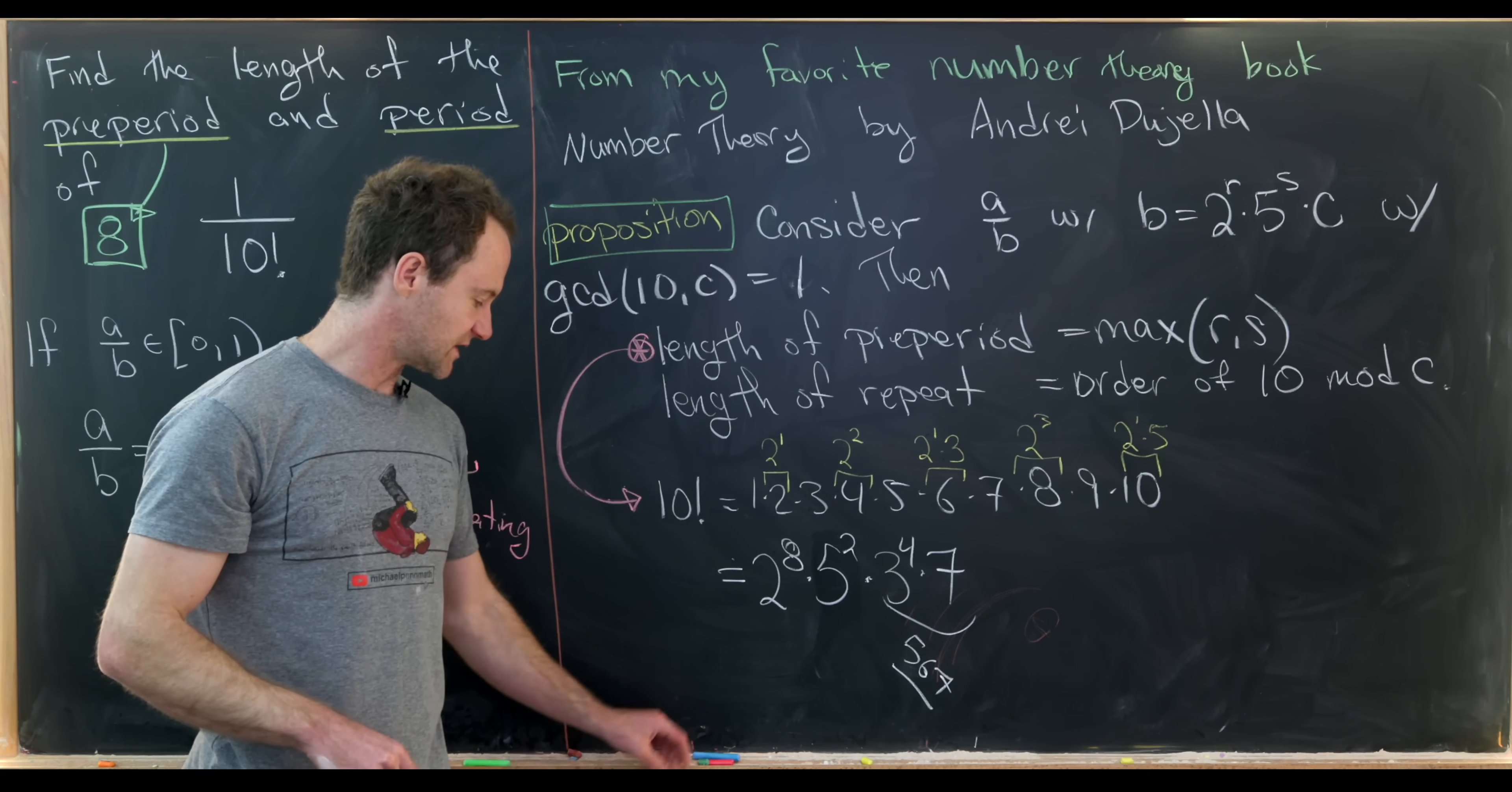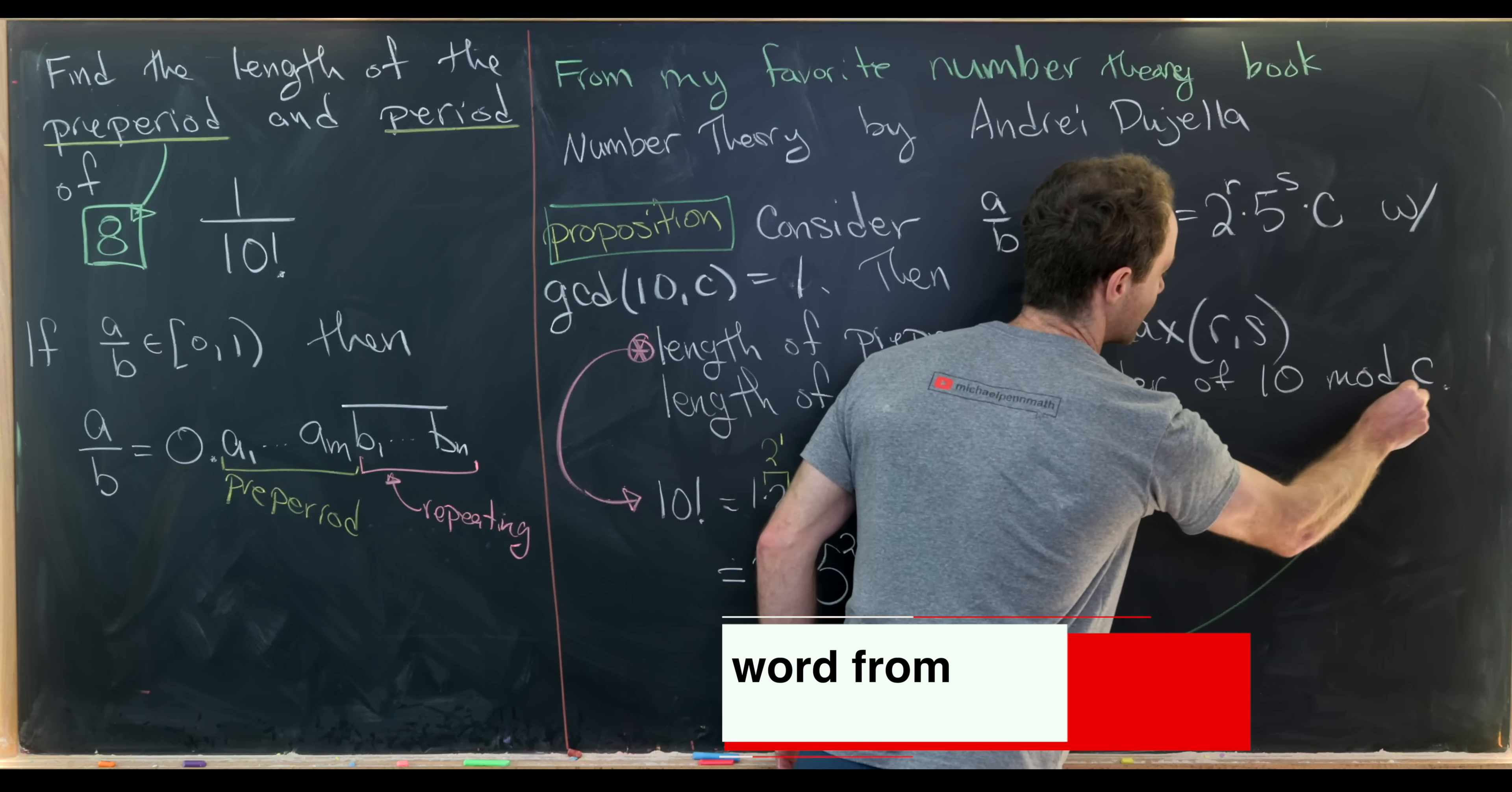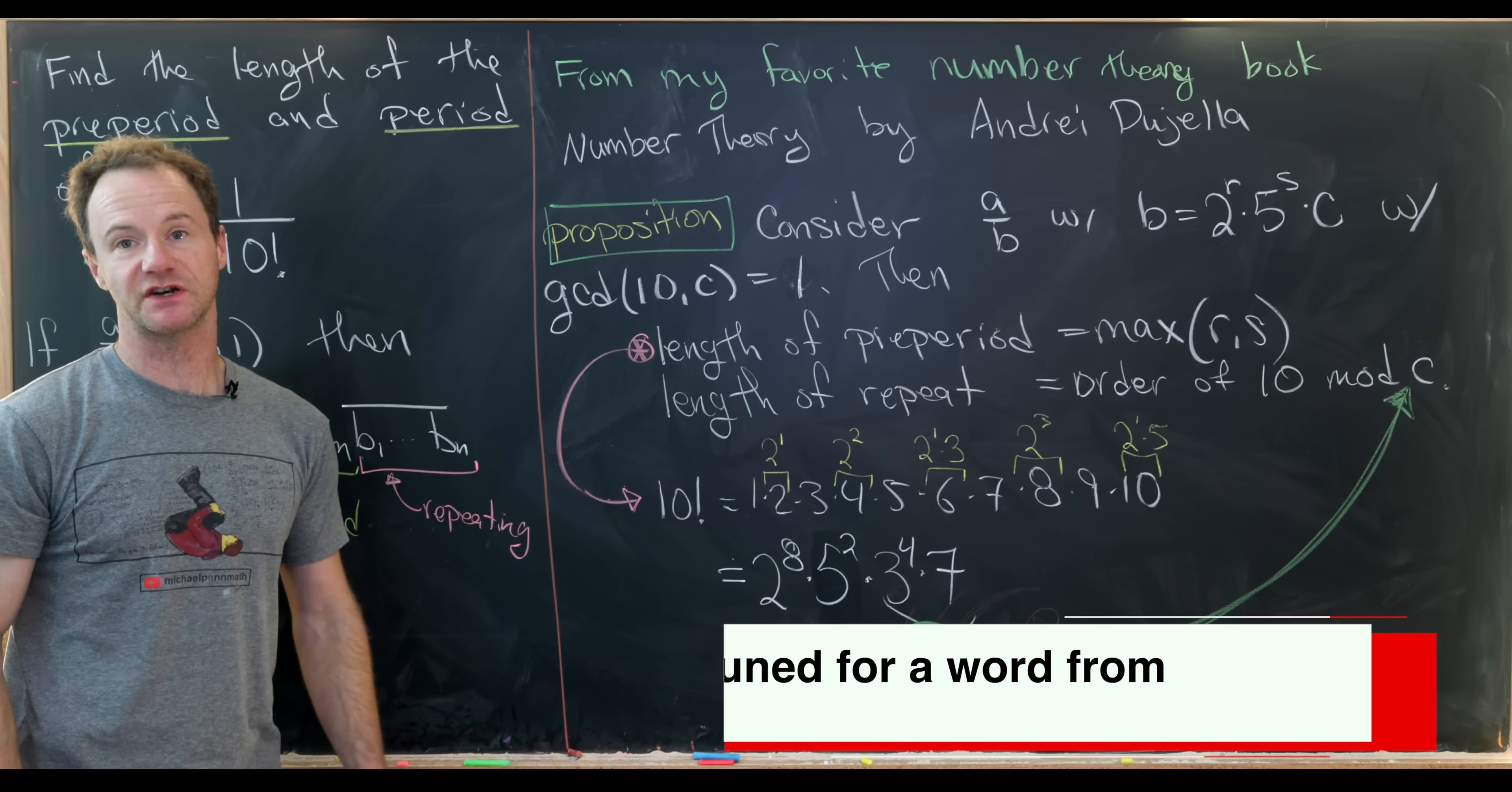Okay, now let's hold on to the rest of this. Now notice that this number C that's left over is 567, which means we'll need to calculate the order of 10 mod 567. And that's what we'll do to finish this off.